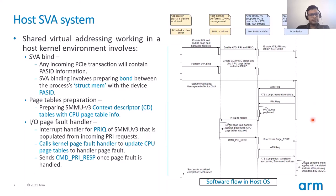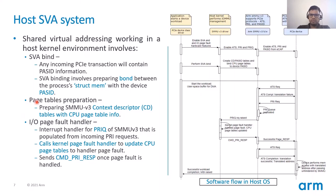In order to understand the SVA flow, let us first understand it at the host operating system level. This will help in identifying the various pieces needed to realize a complete SVA system. Any SVA system running in a host kernel environment will involve three basic things: SVA binding, page table preparation, and IO page fault handling.